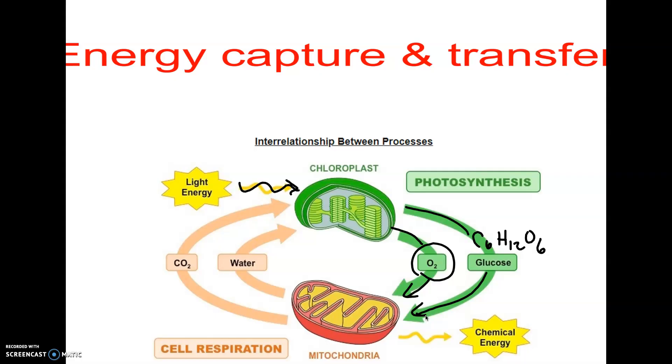So cell respiration takes oxygen and glucose, produces carbon dioxide as a waste product, and water. And those two products can then be recycled back to photosynthesis again. So the reactants of one are the products of the other.